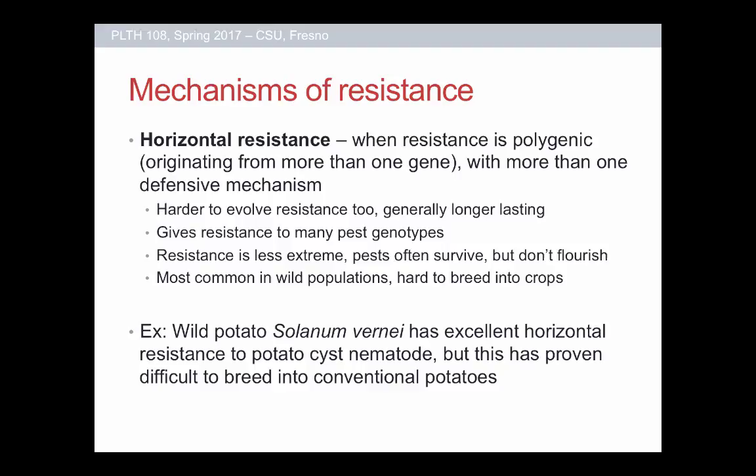The challenge with horizontal resistance is that it's really hard to breed. It's easy to ensure a plant has one gene, but hard to create a plant with seven, eight, maybe a couple dozen resistance genes all working together nicely. That's the pattern natural evolution takes over thousands of years, not conventional breeding over a handful of years. For example, the wild potato Solanum vernei has really great horizontal resistance to the potato cyst nematode, but attempts to cross-breed it with cultivated potato have had no luck — many of these genes are tightly linked with traits that aren't good for cultivation.